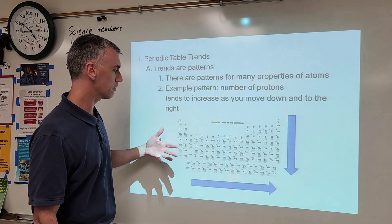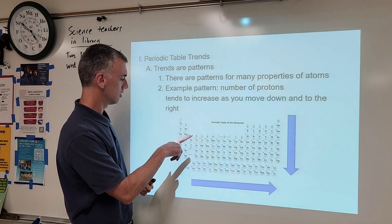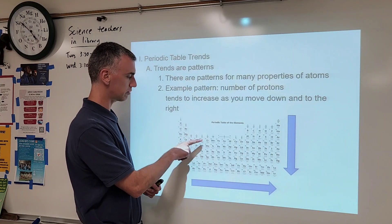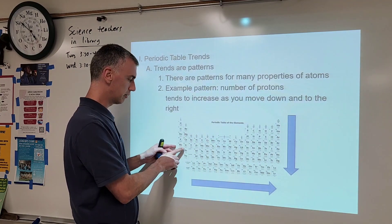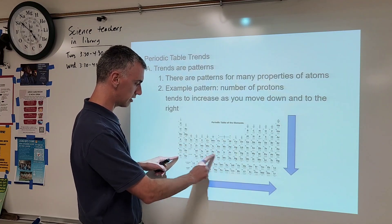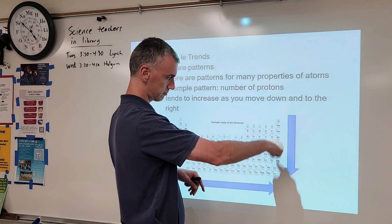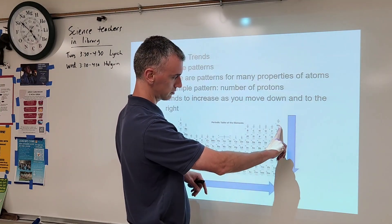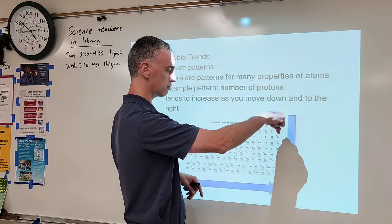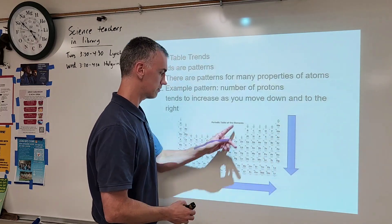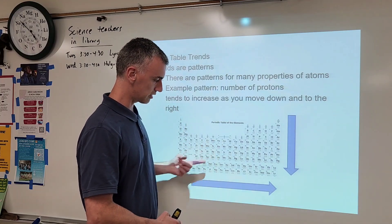Let's look at this pattern. As you go across a period — from 19 to 20 to 21 to 22 to 23, or whatever — the number of protons increases as you go in that direction. That arrow shows the direction the pattern is increasing. Likewise, across a group, which is the vertical grouping, you go from 2 to 10 to 18 to 36, etc. — it's increasing as you go down.